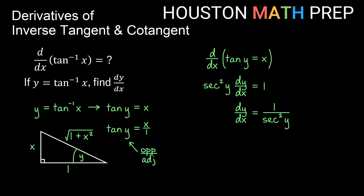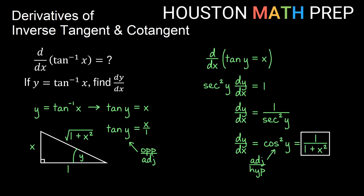Remember that secant of y is the reciprocal of cosine of y, so 1 over secant squared y is the same as cosine squared y by the reciprocal identity. To convert back to x's, we go to our triangle: cosine is adjacent over hypotenuse, so cosine of y equals 1 over the square root of 1 plus x squared. Squaring that gets rid of the square root, so our derivative for the inverse tangent function is 1 over 1 plus x squared.